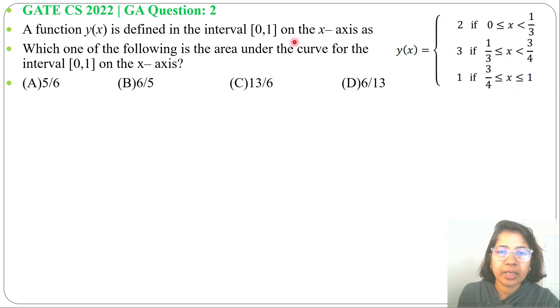Let's hop on previous question of general aptitude. This question was asked in GATE CS 2022 GA question number 2. A function y(x) is defined in the interval [0,1] on the x-axis. Which one of the following is the area under the curve for the interval [0,1] on the x-axis? Four options are given.